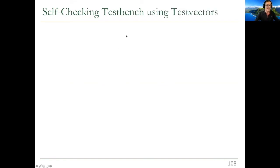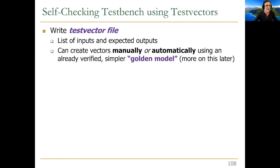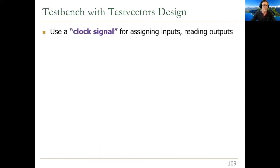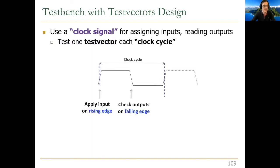The next approach is a self-checking test bench using test vectors. You write a test vector file — a list of inputs and expected outputs. For example, for three inputs: 0,0,0 → output 1; 0,0,1 → output 0; and so on for all eight inputs. You can create vectors manually or automatically using an already-verified golden model. This format makes it easier to add many tests methodically, and you use a clock signal for assigning inputs and reading outputs to automate it much better.